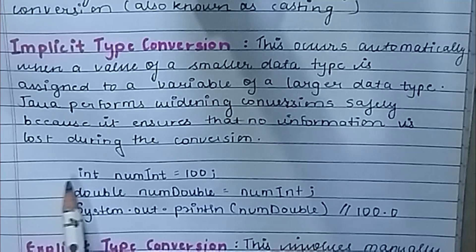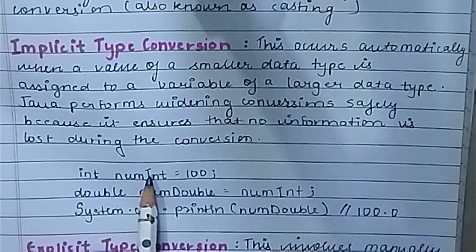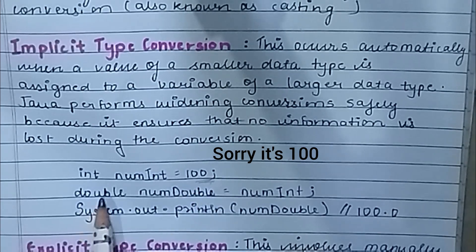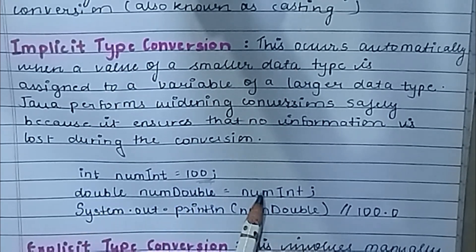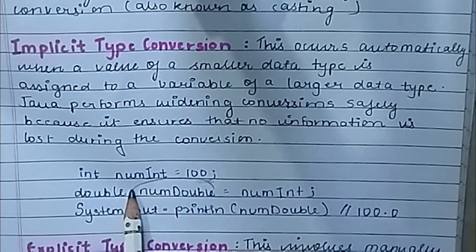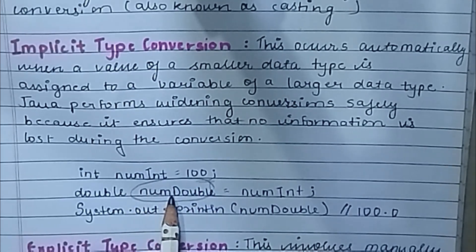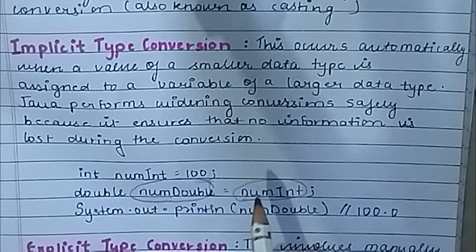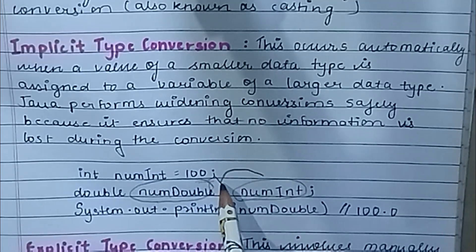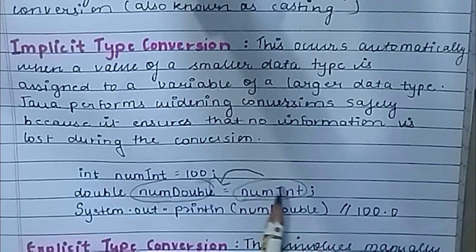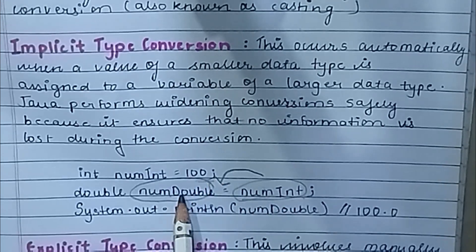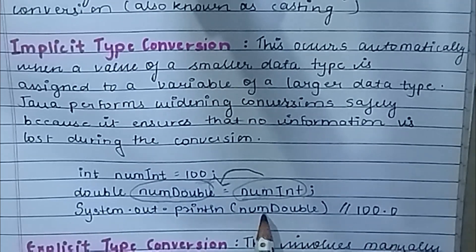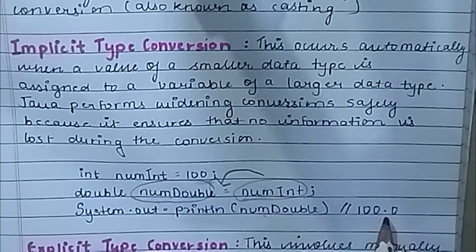This example is: int numInt equals 100. So we have set the value to 100. Double numDouble equals numInt. So we have a numDouble variable and we passed the numInt value. The int value is 100, so it will save in double. And then we print System.out.println(numDouble). The output is 100.0.